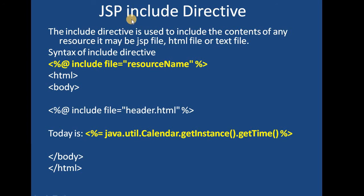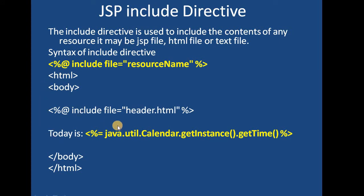The next directive is the include directive, which is used to include the contents of any resource — it may be another JSP file, an HTML file, or any other text file. The syntax uses the directive symbol, then 'include', then the file attribute with the resource name as its value — it could be index.jsp, resources.html, abc.txt, or any filename with its path. For example, we can include a header.html file into our web page and use expression tags to print the time using the Calendar class from java.util.